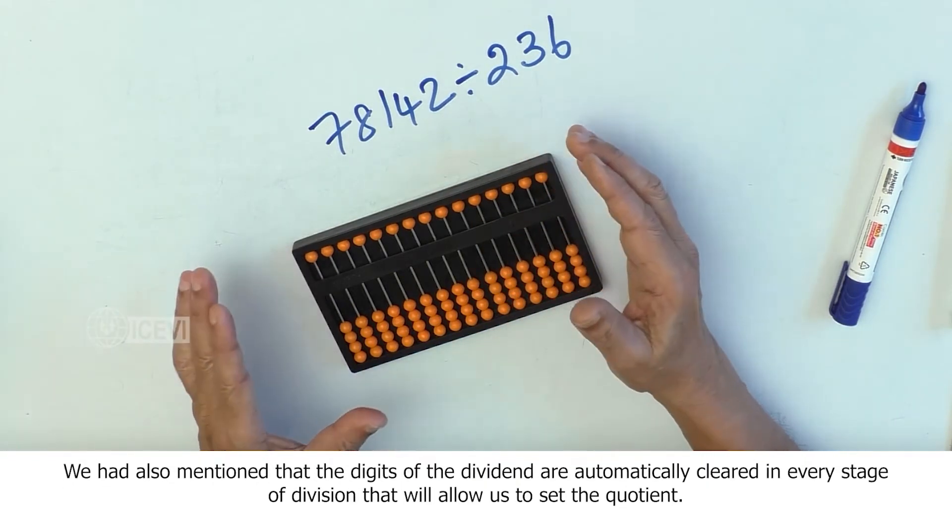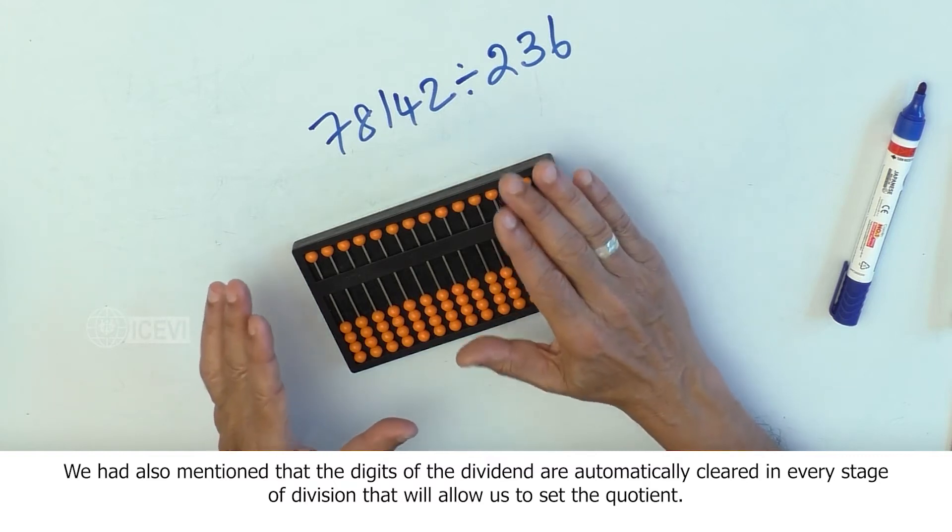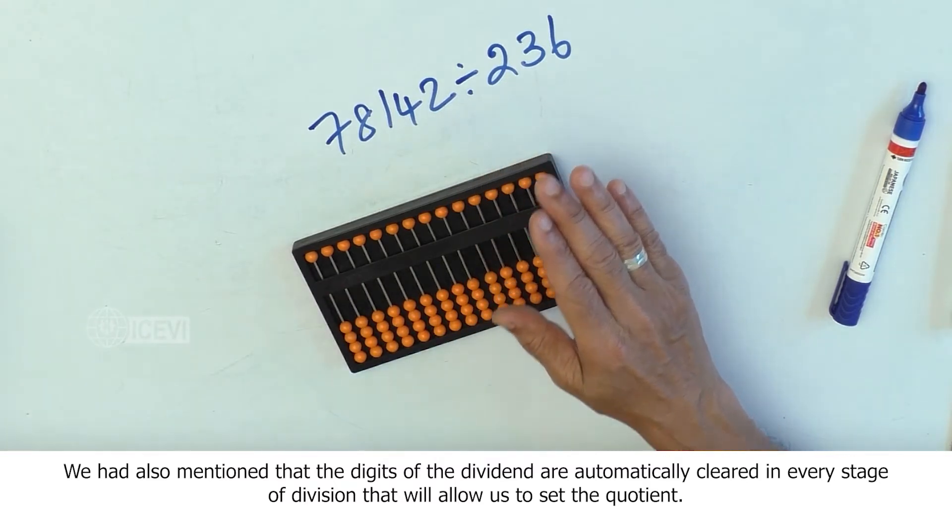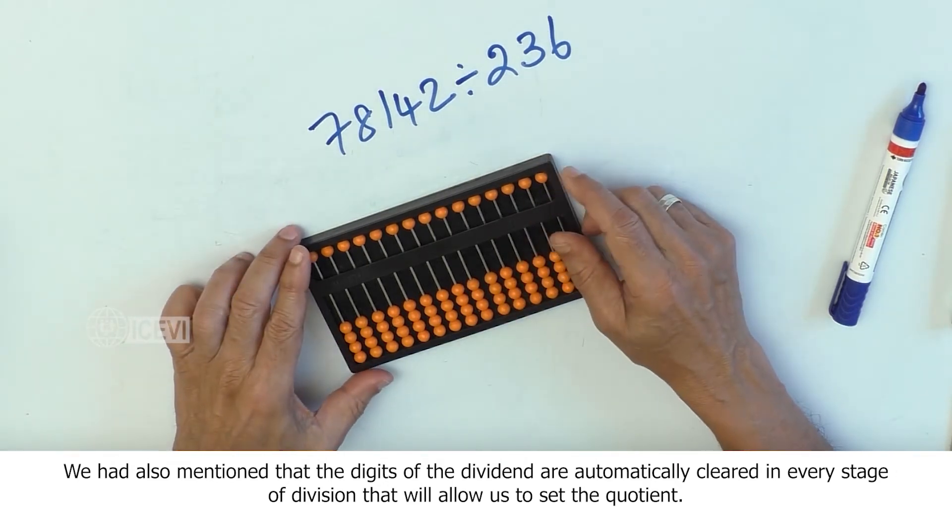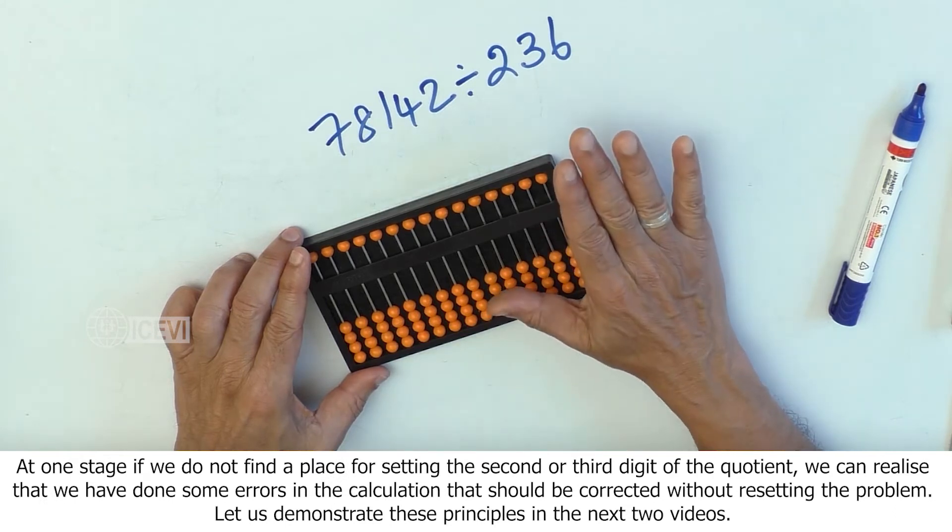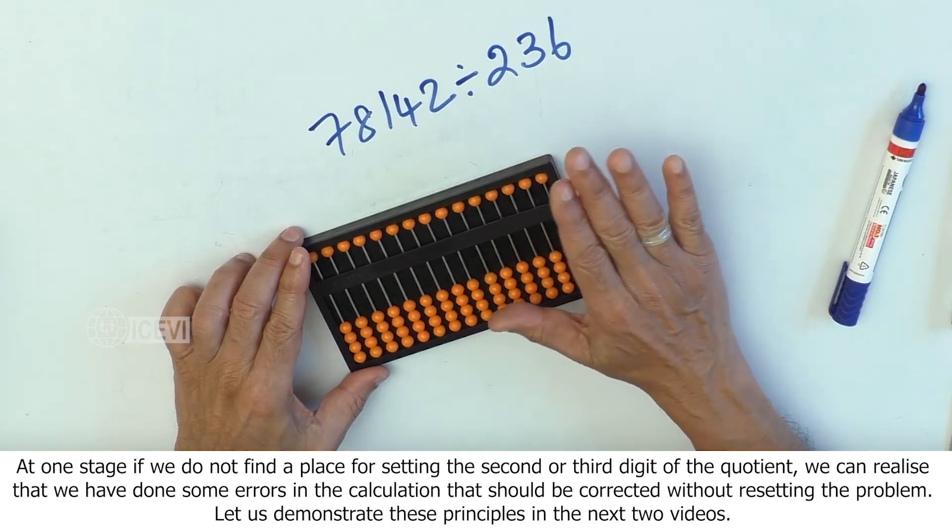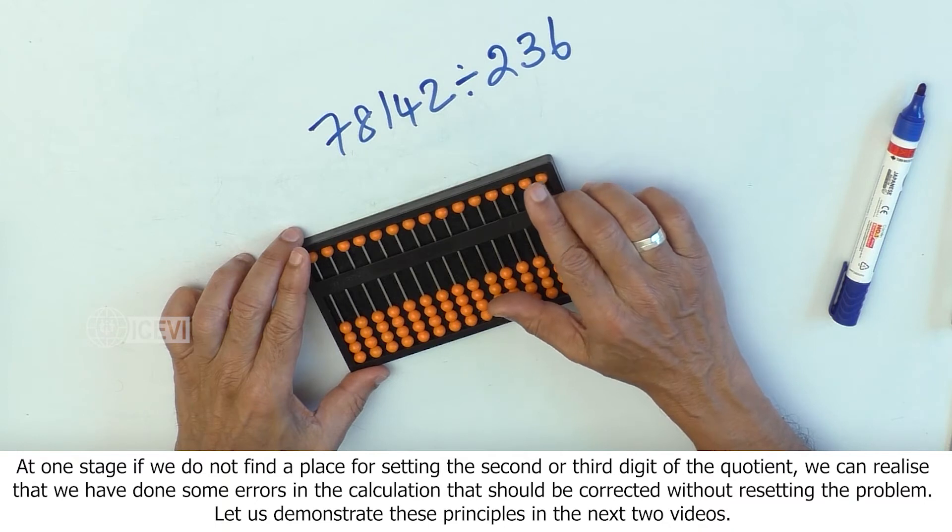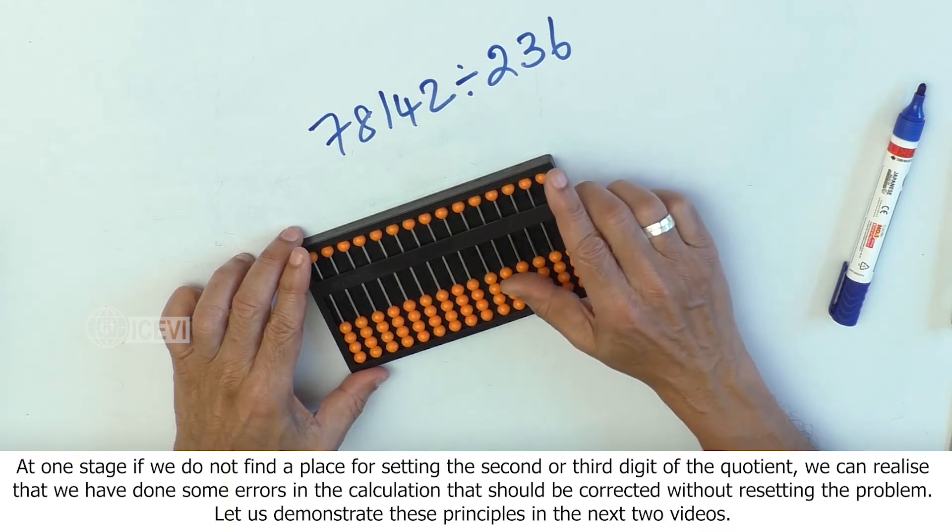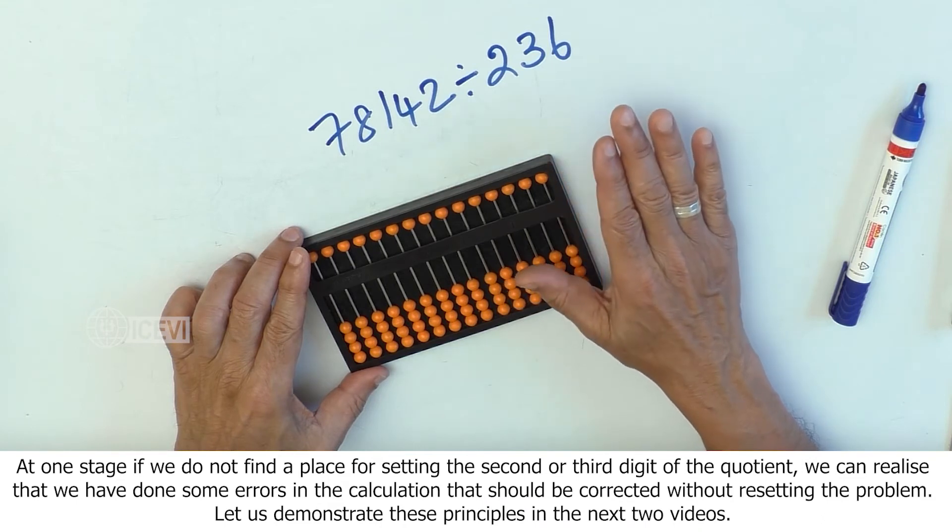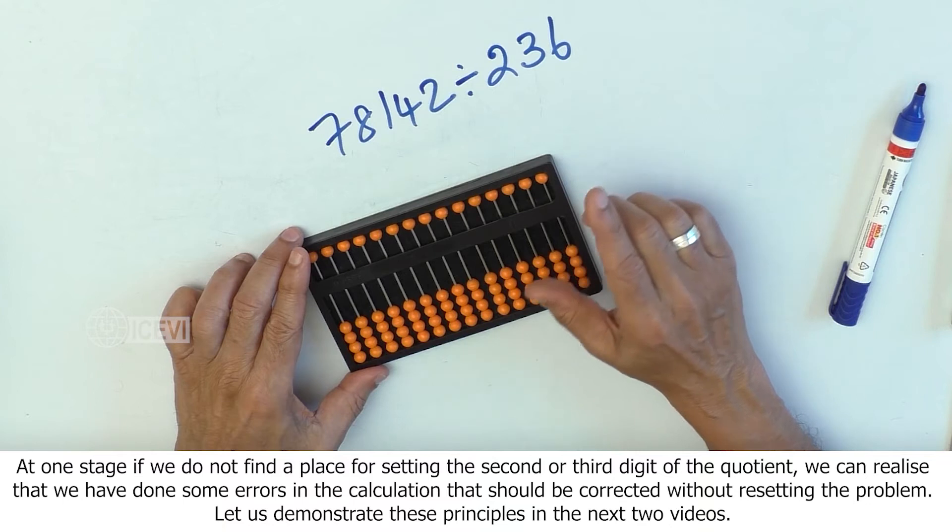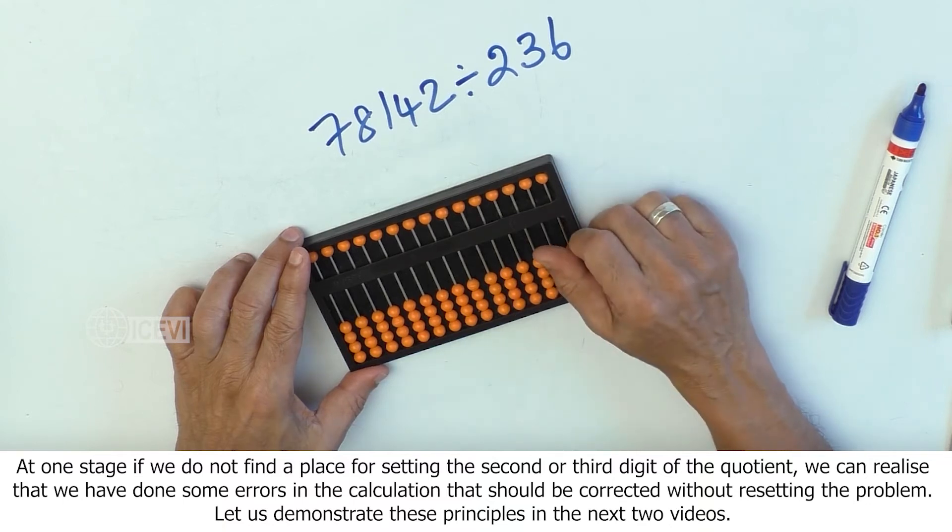We had also mentioned that the digits of the dividend are automatically cleared in every stage of division that will allow us to set the quotient. At one stage, if we do not find a place for setting the second or third digit of the quotient, we can realize that we have done some errors in the calculation that should be corrected without resetting the problem.